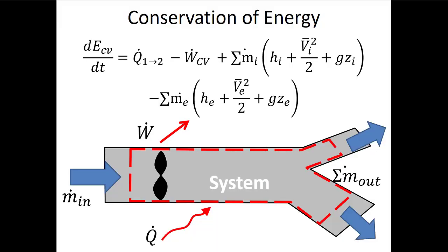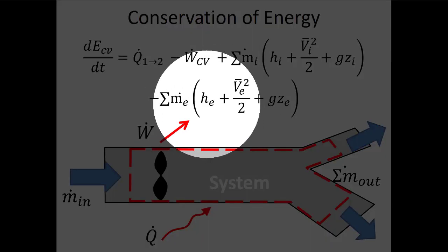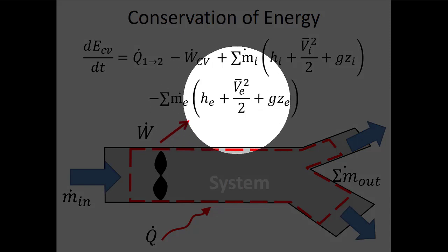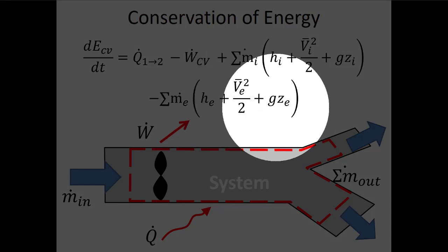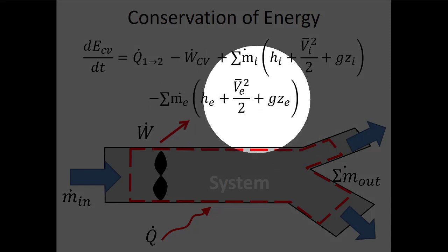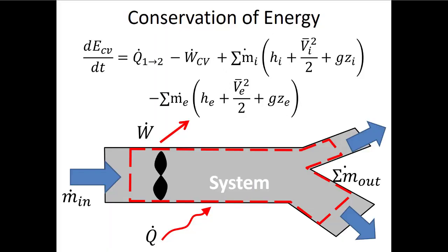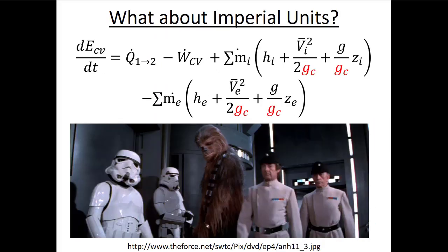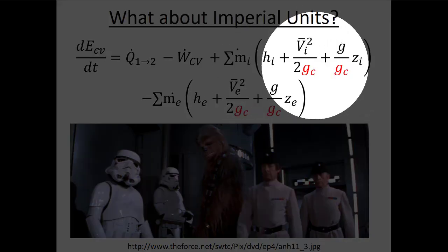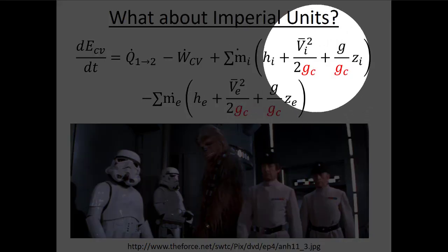The energy terms we're concerned with are specific enthalpy, kinetic energy, and gravitational potential energy — we look at the differences between these terms between inlets and outlets. Life gets a little more difficult when we deal with imperial units. Even in metric units, the kinetic energy and potential energy terms can be a problem, because typically we'll get joules per second instead of kilojoules per second, which we'd get by looking up enthalpy in the textbook.